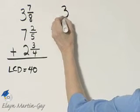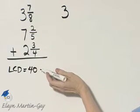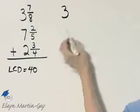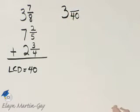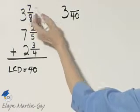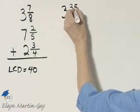All right, so I have 3 and 7 eighths. 8 times what number gives me 40? Well, 8 times 5 gives me 40. Now, remember that 5, because we'll now multiply 7 times 5, and that's 35.